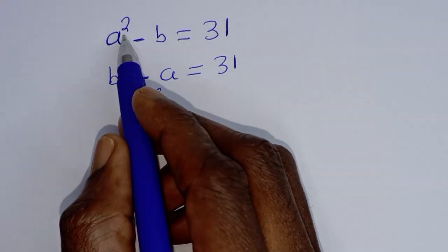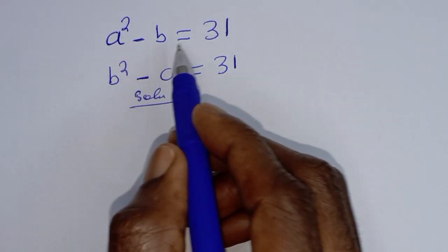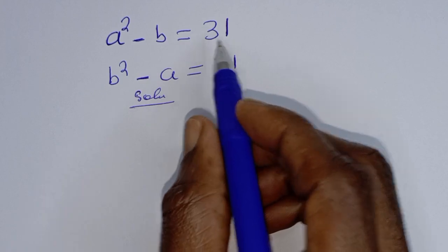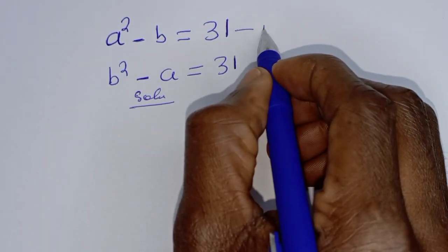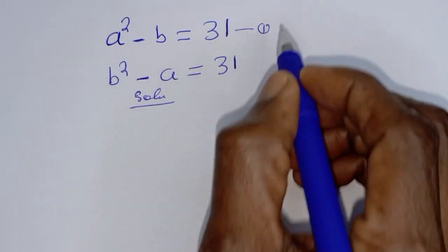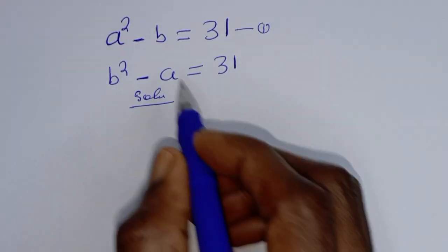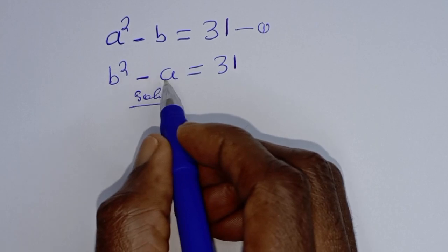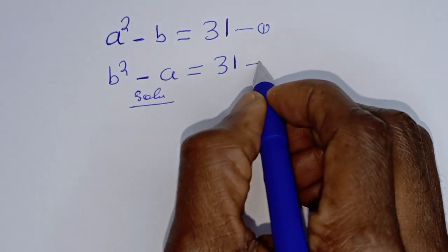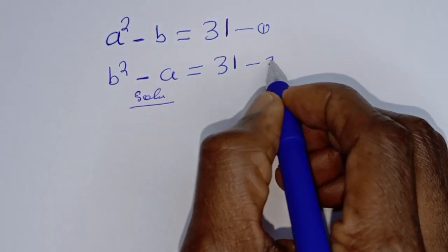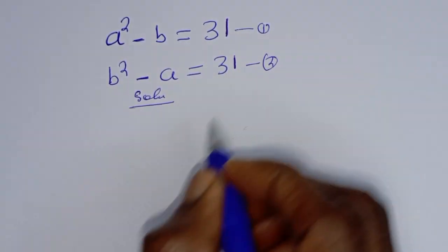A squared minus B is equal to 31 — let's call this equation 1. B squared minus A is equal to 31 — let's call this equation 2.